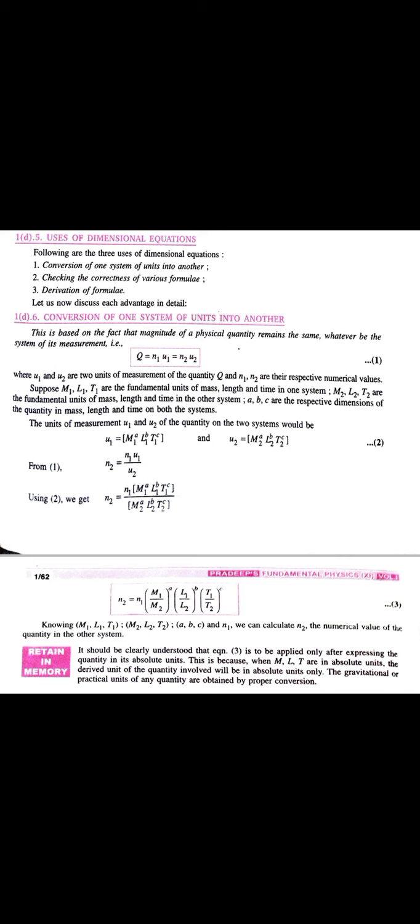And one thing you should always keep in mind is that this equation 3 is only applied after expressing the quantity in its absolute terms or absolute units. This is because when MLT are in absolute unit, the derived unit of the quantity involved will be in absolute units only. The gravitational or practical units of any quantity are obtained by proper conversion. This process, I have explained to you. If you are confused, what has been done, then you should look at the example process. I hope you will understand better.